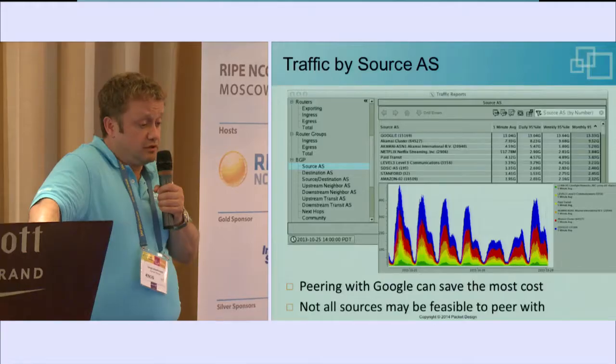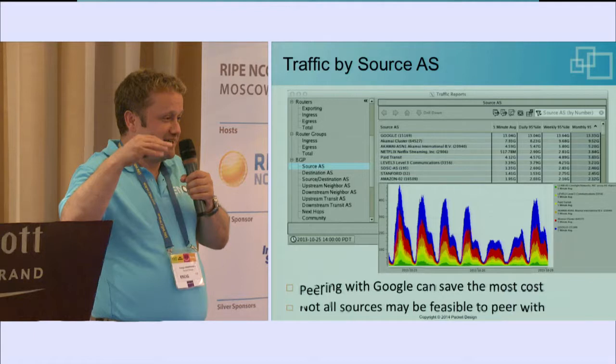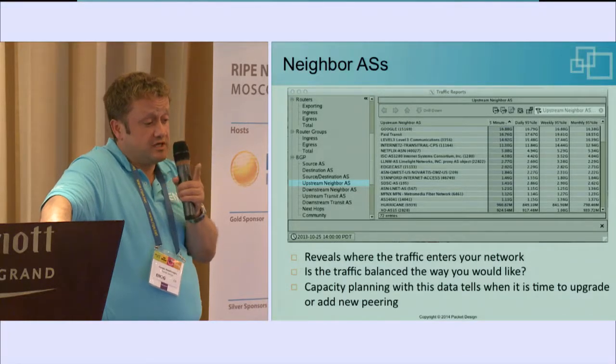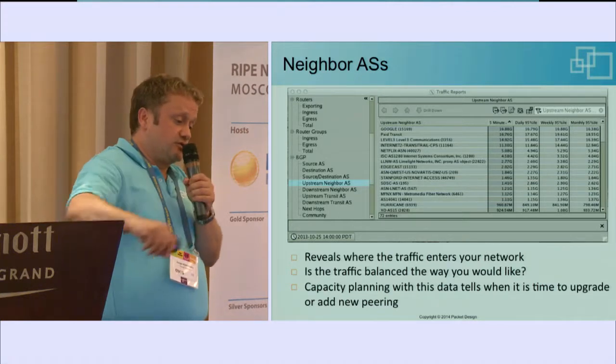From this you can generate rich BGP peering analysis reports. For example, here are the top traffic sources by AS — Google, Akamai, Netflix for this US provider. This provider has a direct peering relationship with Google, roughly 16 to 18 gigabits per second, and they don't pay for that traffic. The second entry in the table is their paid transit provider, and they are paying significant money for that. You need this kind of data to see whether you can cut costs by peering directly.